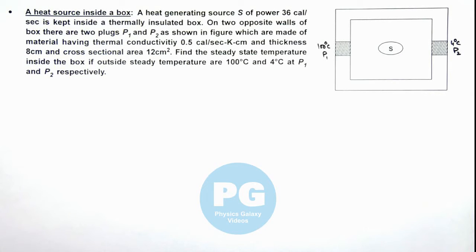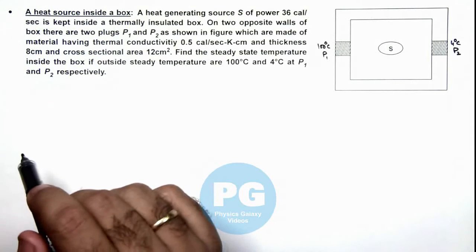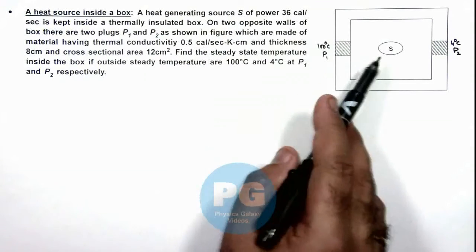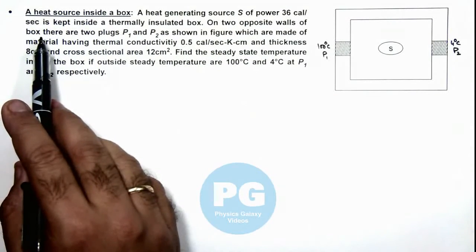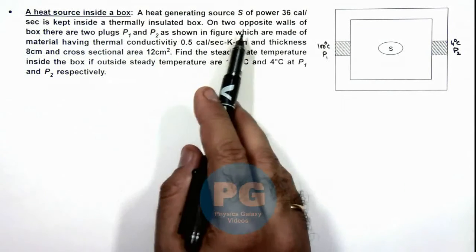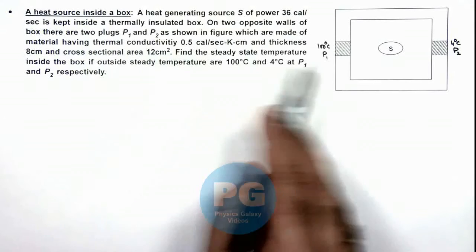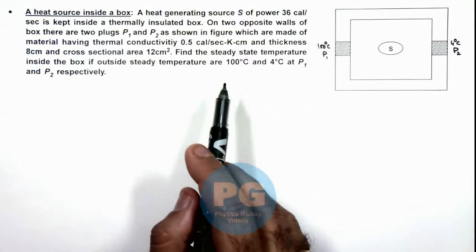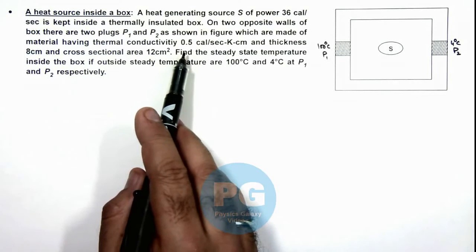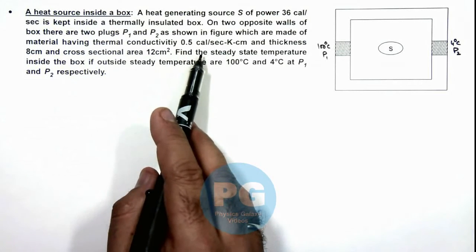In this illustration we'll study a case where there is a heat source inside a box. We are given that a heat generating source S which is of power 36 calories per second is kept inside a thermally insulated box. On the two opposite walls of the box there are two plugs P1 and P2 which are made of a material having thermal conductivity 0.5 calories per second kelvin centimeter.